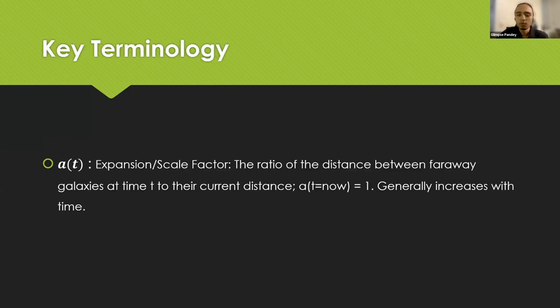For the rest of the presentation, a key term to remember is expansion factor. This is the ratio of distance between faraway galaxies at time t to their current distance. So a of the current time equals one because the ratio of distances to their current distance would be one.